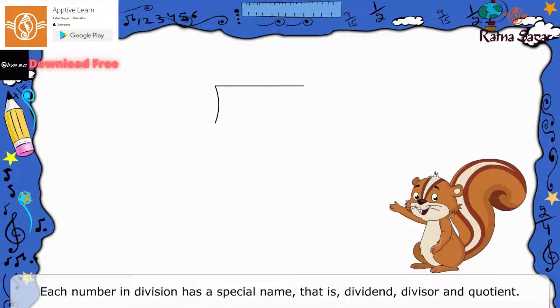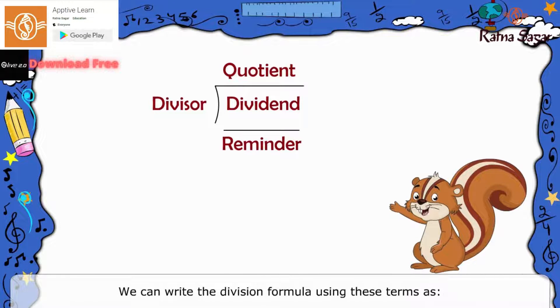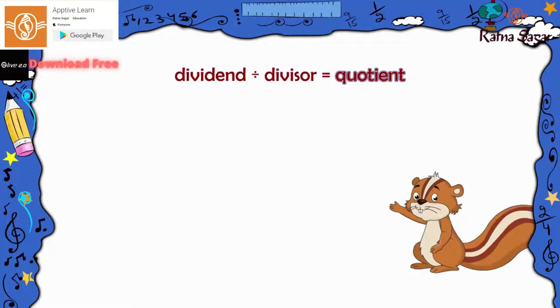Each number in division has a special name, that is, dividend, divisor, and quotient. We can write the division formula using these terms as dividend divided by divisor is equal to quotient.